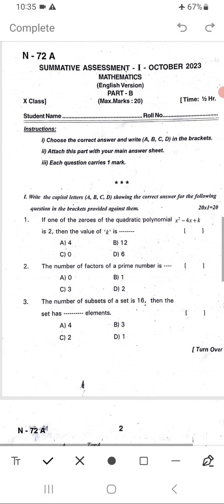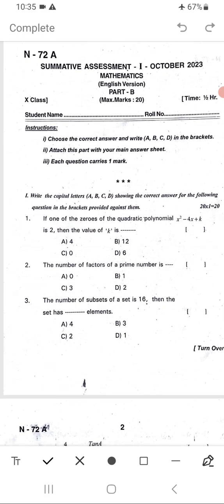See Part B questions. First question: If one of the zeros of the quadratic polynomial x² - 4x + k is 2, then the value of k is what? Just we can find out the k value. Second question: The number of factors of a prime number. Simple basic questions.